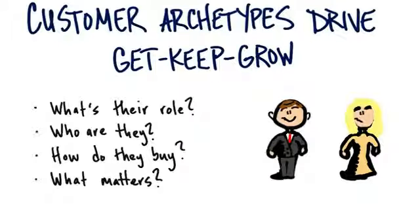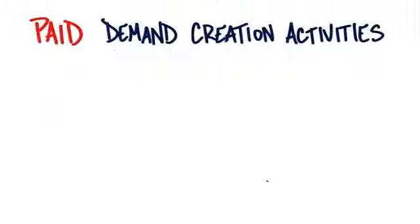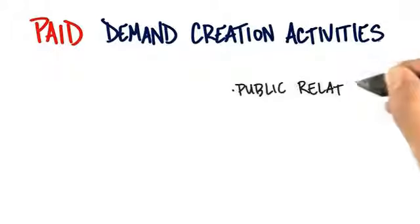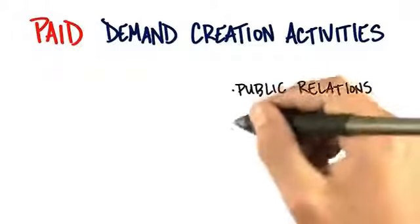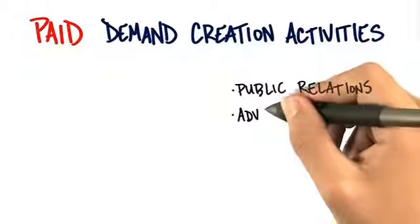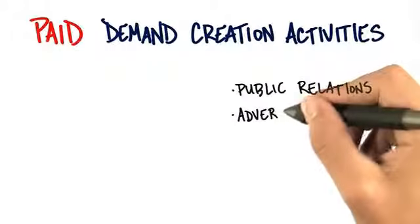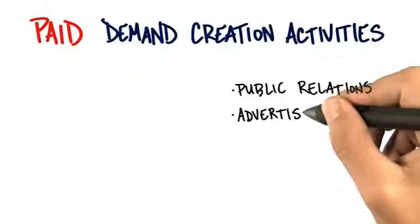There are two types of ways to create demand. The first set of things are paid demand creation activities — a fancy way of saying I'm going to pay somebody to get your interest. The first people I might want to pay is a public relations agency. I might pay them a certain fee per month to help get stories about my products or my company in newspapers, blogs, or tech journals. Hiring a PR agency is a paid demand creation activity.